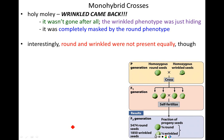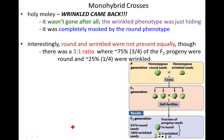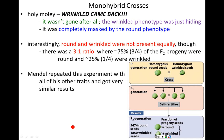What was interesting about the F2 generation was that round and wrinkled were not present equally. About 75% of the F2 generation was round and 25% was wrinkled — a three to one ratio of round to wrinkled. Mendel repeated his experiment with all his other traits — seed color, pod shape, pod color, stem length — and got very similar results in all cases. In the first generation, one trait would be masked completely by another. Upon self-fertilization, the masked trait would come back at about 25%. He was on to something really big.